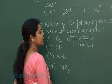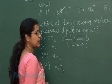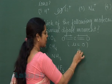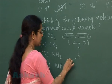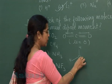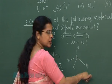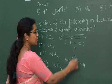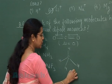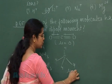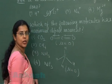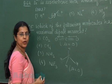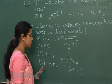The second option is methane (CH₄). Methane is a tetrahedral molecule having four bonds and the structure is symmetrical. So this molecule is also a non-polar molecule having dipole moment equal to zero.